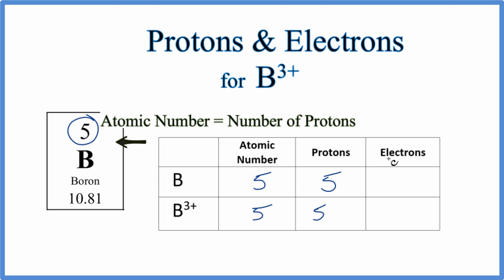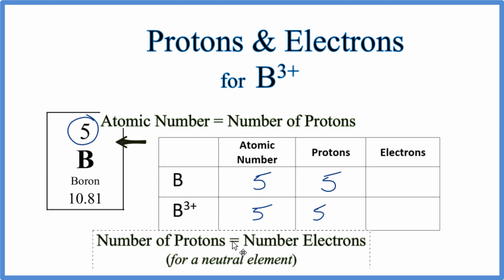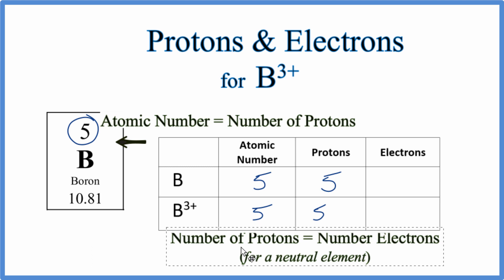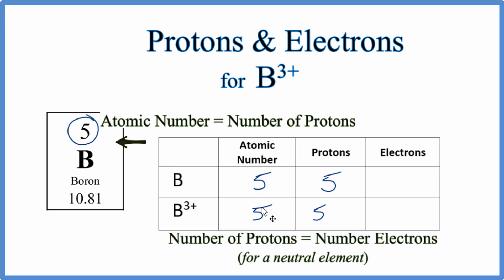To find the number of electrons, we need to realize when we have this neutral atom here, this neutral boron, that the number of electrons is going to be equal to the number of protons. So here we have five protons, we're going to have five electrons for this neutral boron atom.